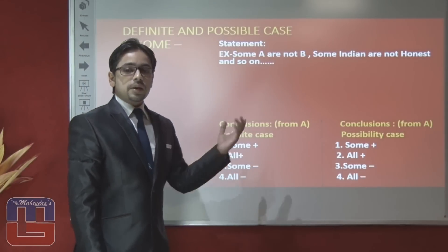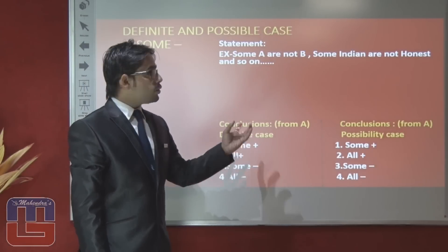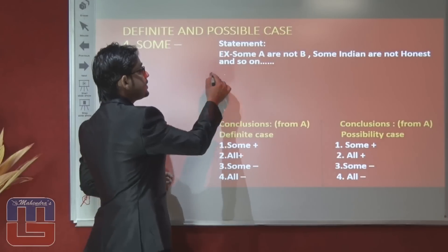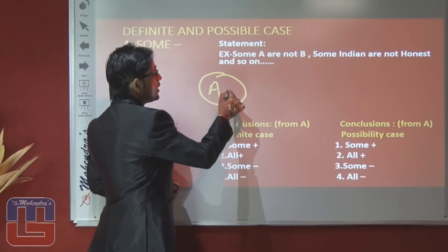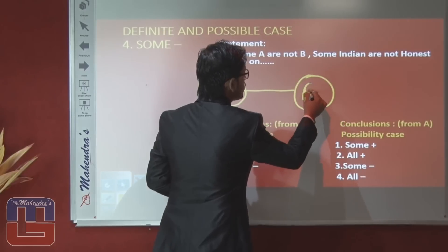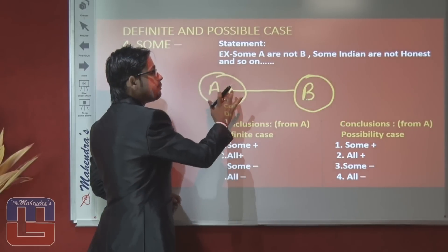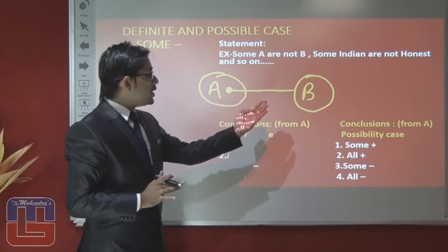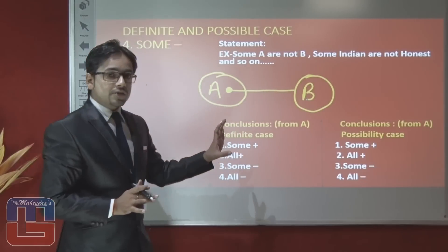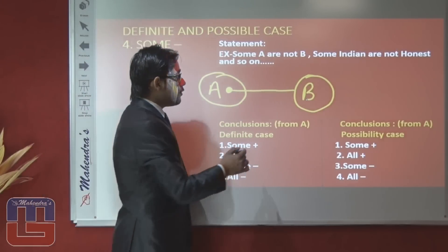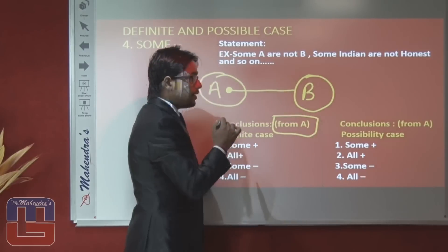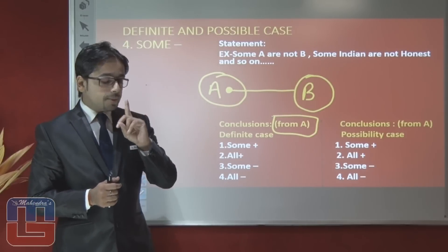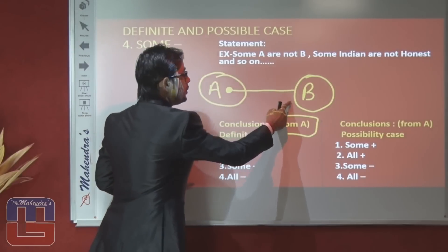For 'some A are not B,' such as 'some Indians are not honest' or 'some 1 are not 2': this is a some-negative relation between these two entities — some part of A is not B. But we cannot conclude anything about B to A. On the point of view of A, the definite information is negative, so we can conclude only one thing in definite manner: that some A are not B.